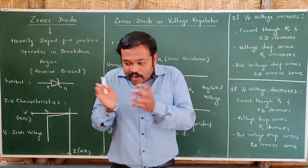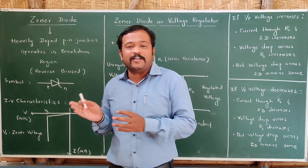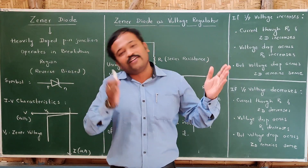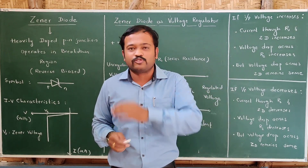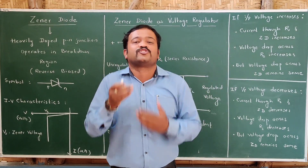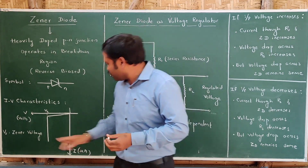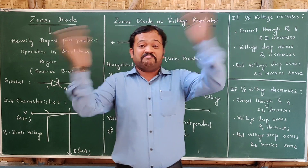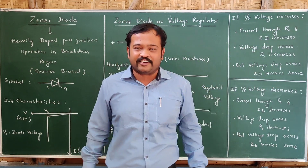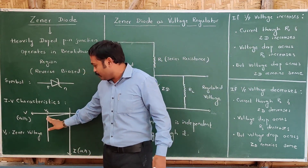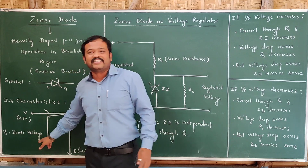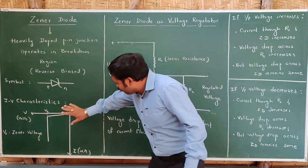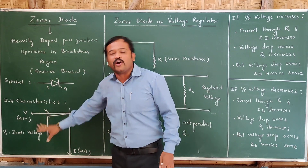The electric field is strong enough that it breaks the covalent bond between the atoms. Whenever the covalent bond between atoms near the junction breaks, we get electrons as well as holes — electron-hole pairs are formed. These electric charges are responsible for the sudden increase in the current. So covalent bonds break, charges are generated, and there will be an increase in current. At a particular voltage — let us call it the Zener voltage — this is where the Zener diode works.